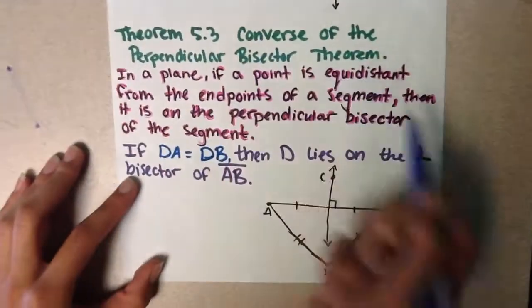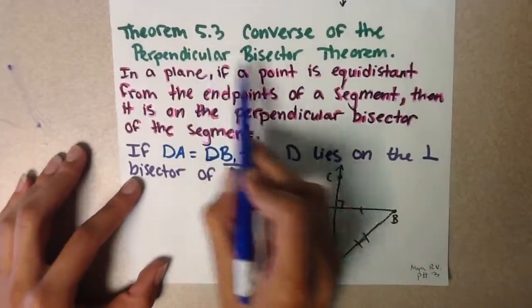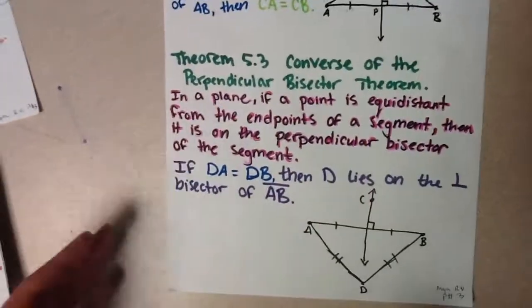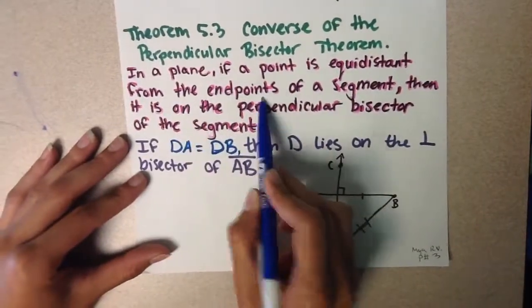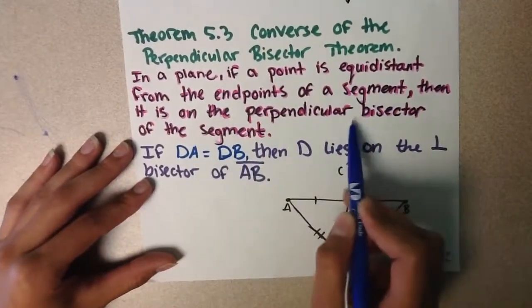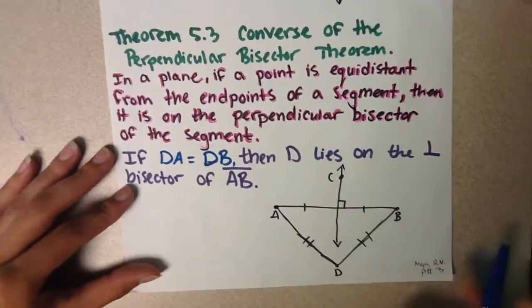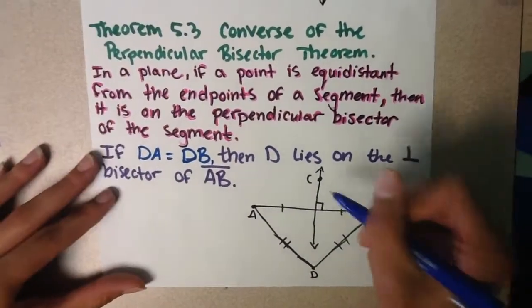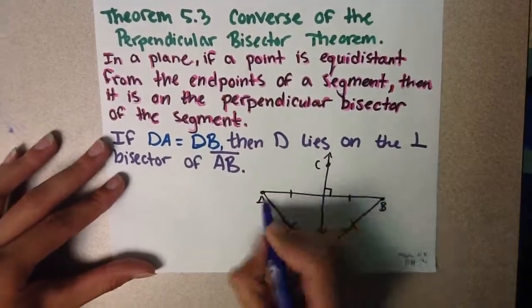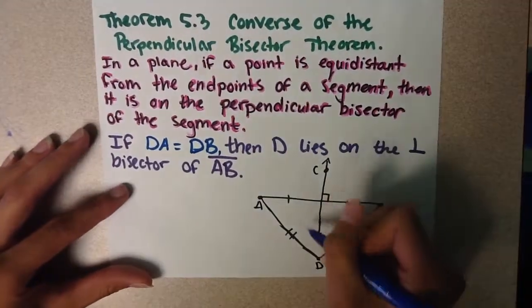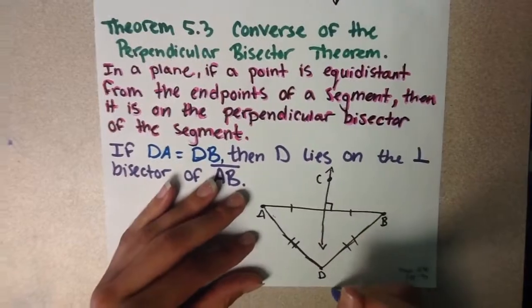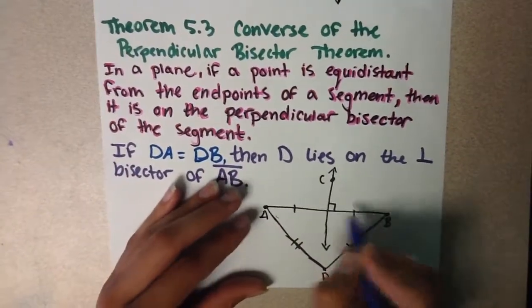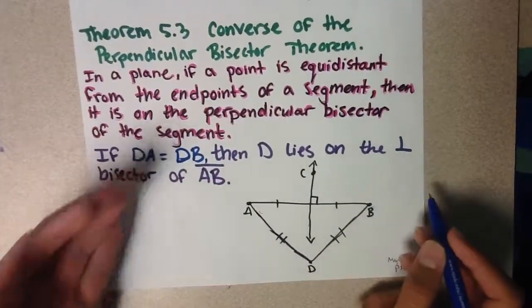Theorem 5.3 deals with the converse of the perpendicular bisector theorem. It states that in a plane, if a point is equidistant from the endpoints of a segment, then it is on the perpendicular bisector of the segment. Since this bisects that line segment in the middle, and since this is equidistant, it's going to eventually land on there, because this is always going to be the same distance from each other.